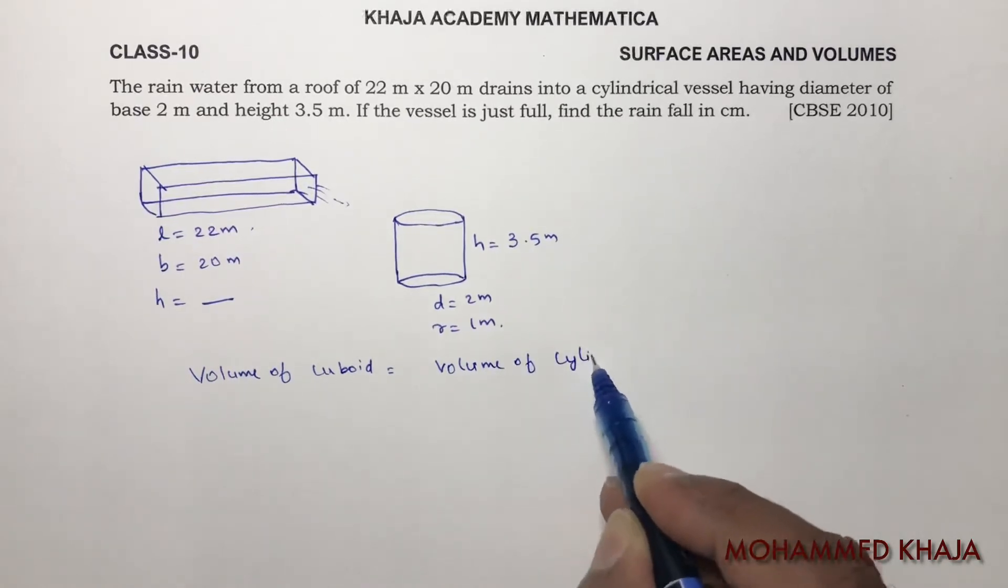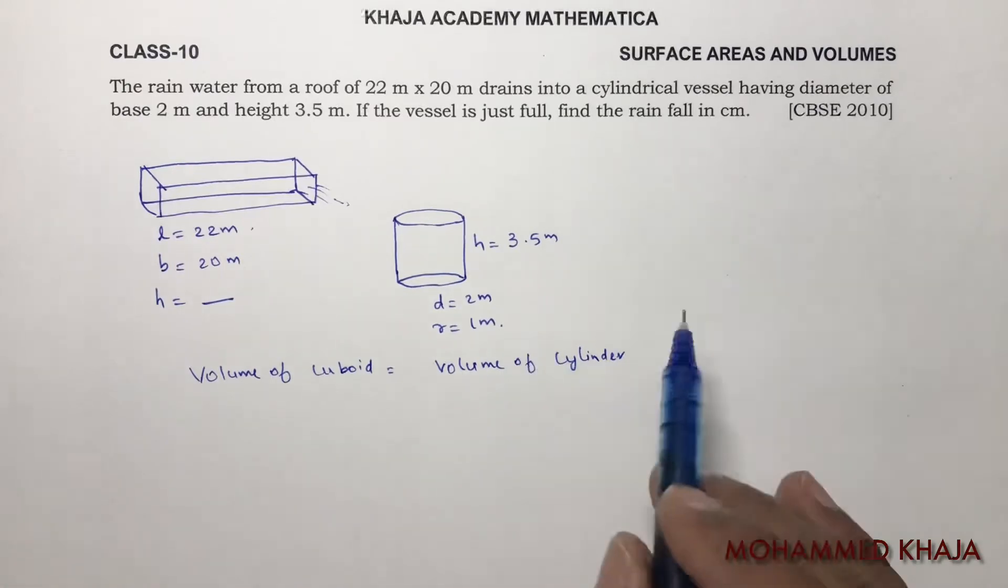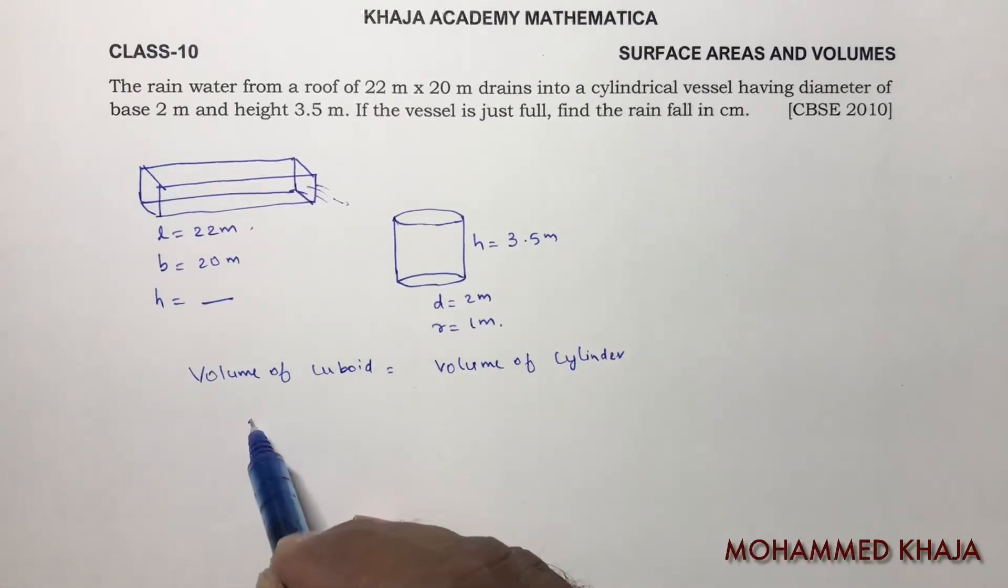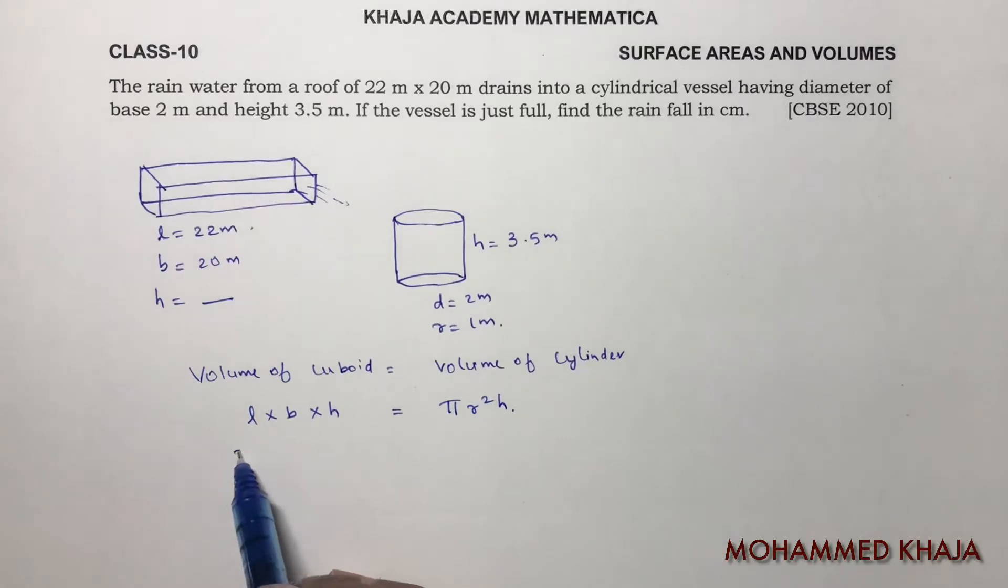Volume of cuboid equals volume of cylinder. If you do directly at a stretch you'll get the answer quickly. Volume of cuboid is l × b × h, and volume of cylinder is π r² h. L value is 22.